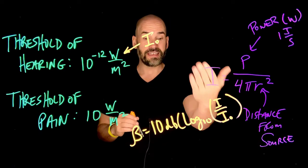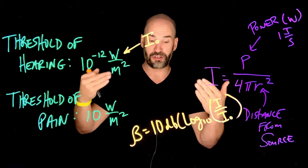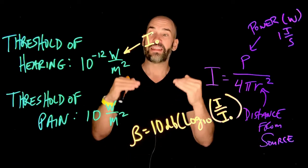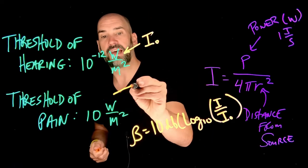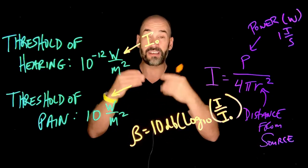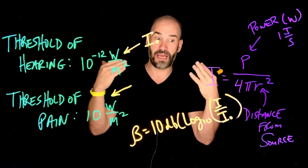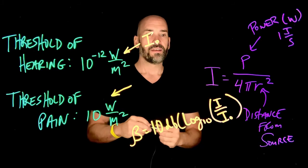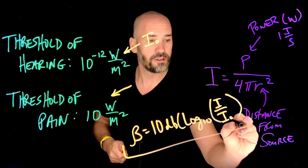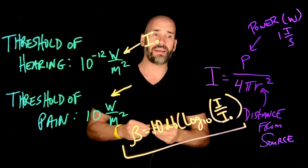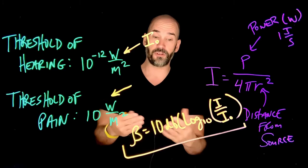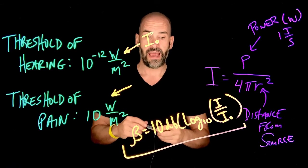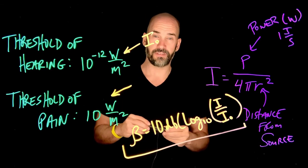Getting near the threshold of pain, a jet plane takeoff or a loud concert at 130 decibels is where our ears are not only being actively damaged, but it actually is painful to hear those sounds. This formula may look a little new to you, so I'd love to make it easier by doing a classic example of how we might use the decibel equation to solve a real-life problem — and I'll tackle that in the next video.